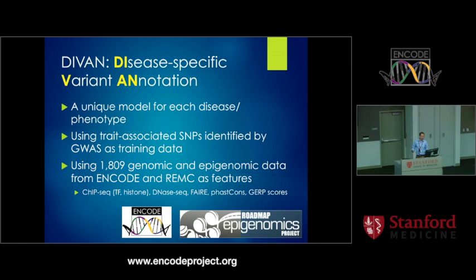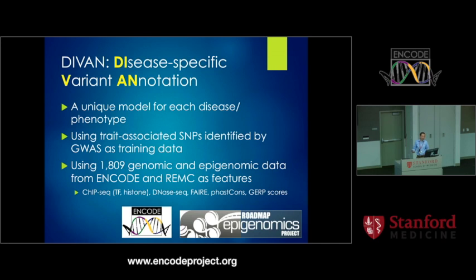In this method, we used trait-associated SNPs identified by GWAS as training data — specifically, data collected from the GWAS results browser. As features, we used more than 1,800 genomic datasets from the ENCODE consortium and the Roadmap Epigenomics project, including ChIP-seq data, DNase data, FAIRE data, and so on.